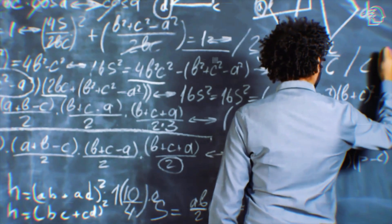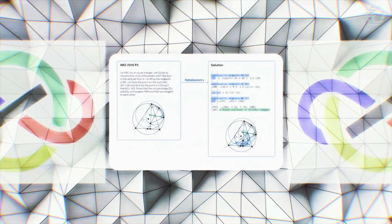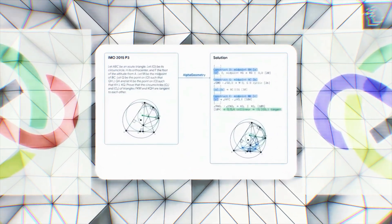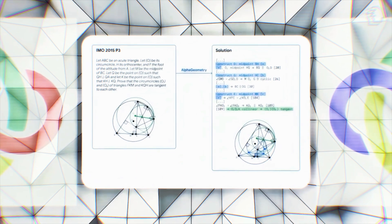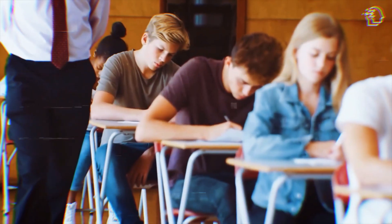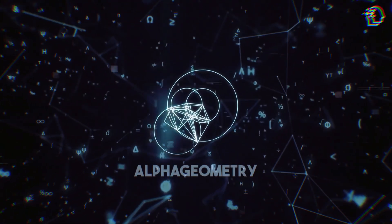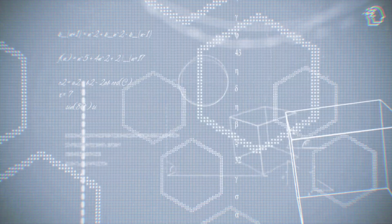So, an AI that solves geometry problems with the finesse of an International Mathematical Olympiad gold medalist. Sounds like a leap into the future, right? Well, the future is now and it's called AlphaGeometry. Join me as we delve into this fascinating innovation.